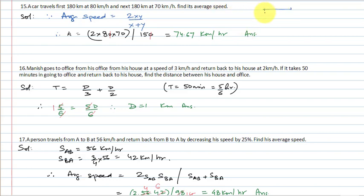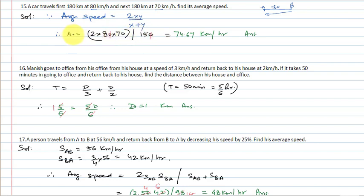This is like a car traveling from A to B at 80 km per hour and returning from B to A at 70 km per hour. The average speed formula when the same distance is covered both ways is 2xy upon x plus y. Here x = 80, y = 70. So average speed = 2 × 80 × 70 divided by (80 + 70) = 11200/150 = 74.67 km per hour. This is the answer.